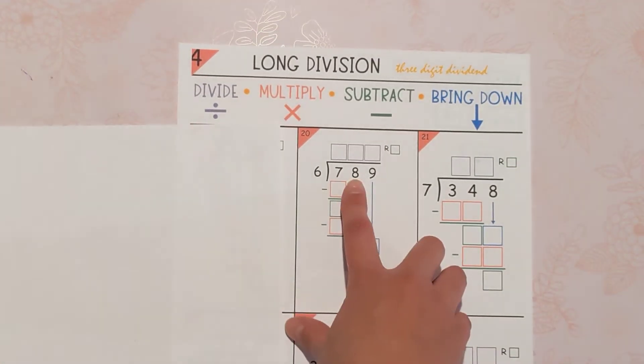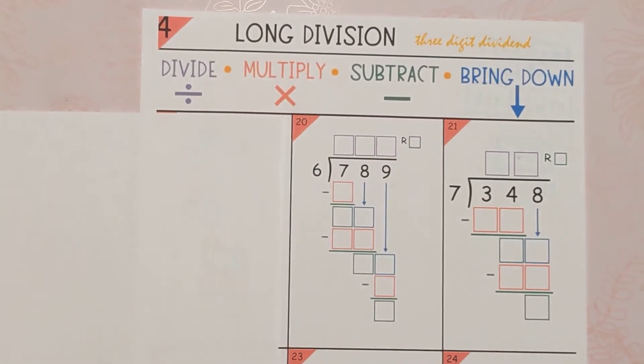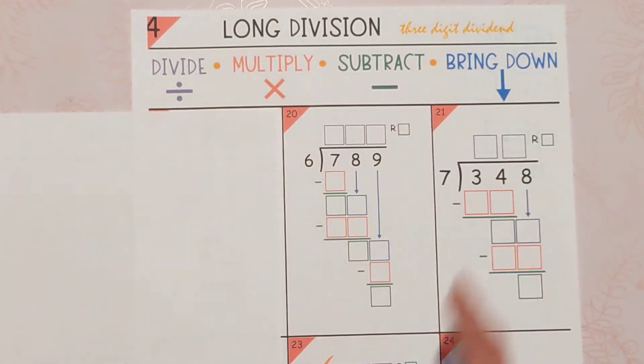Hi everybody, we're going to do 789 divided by 6. You can follow along with a piece of paper or with these worksheets. We're practicing using the standard algorithm.